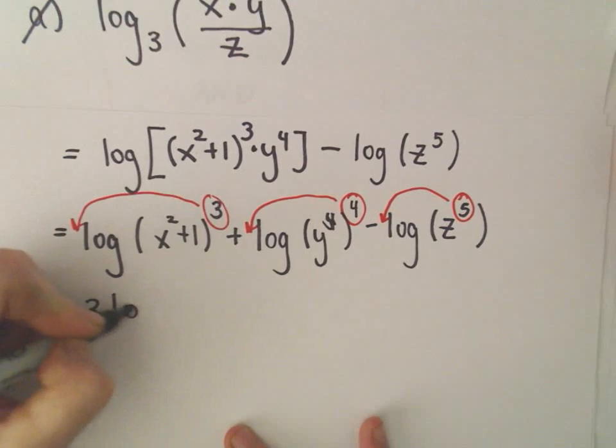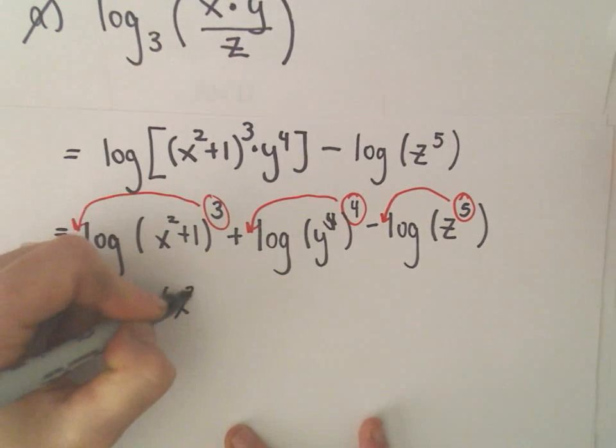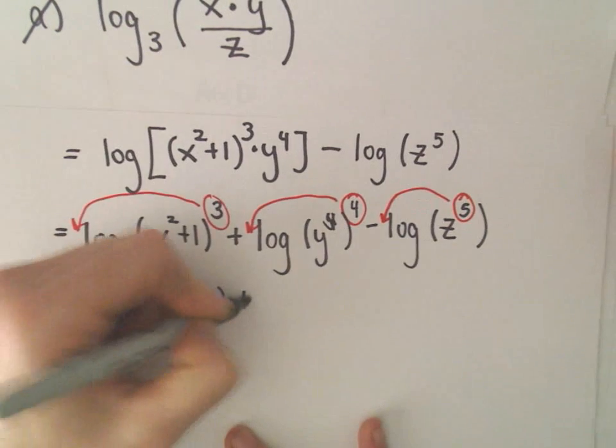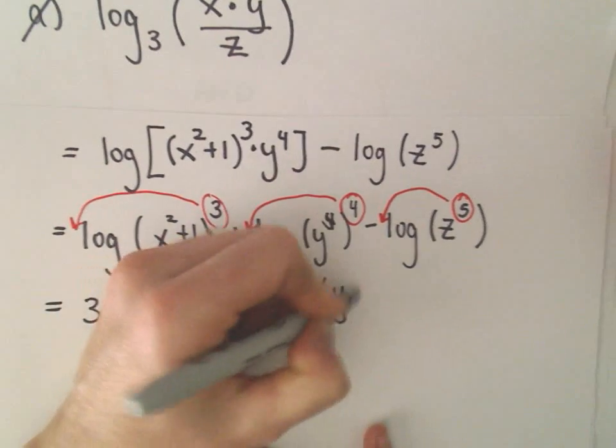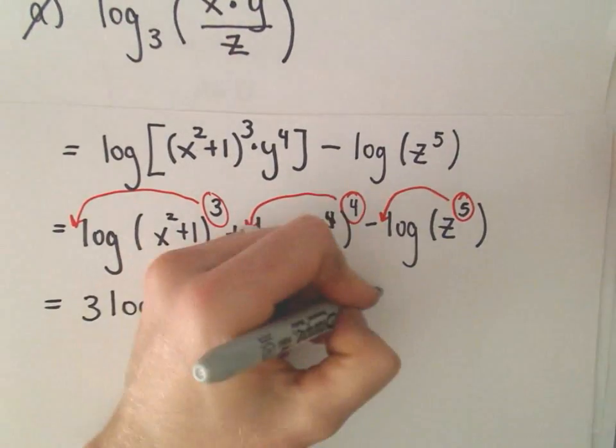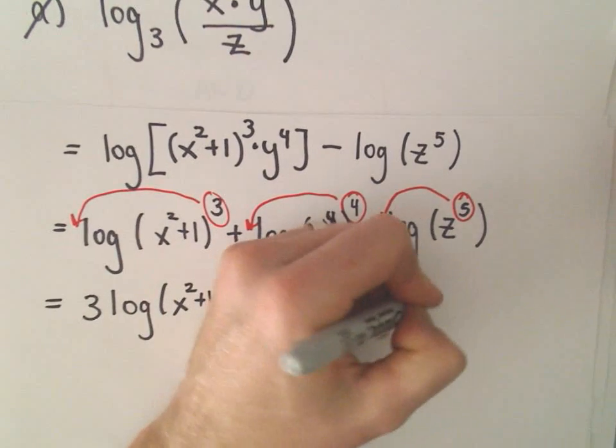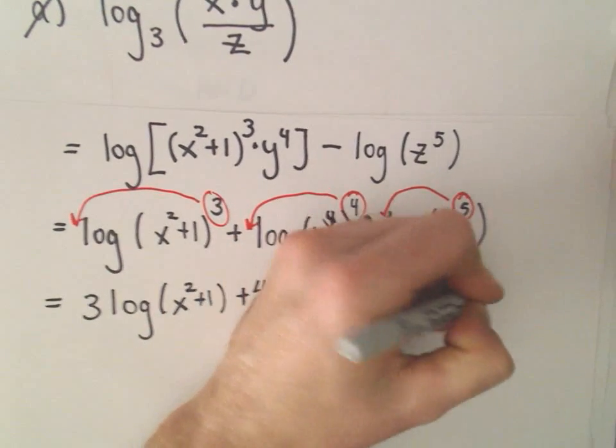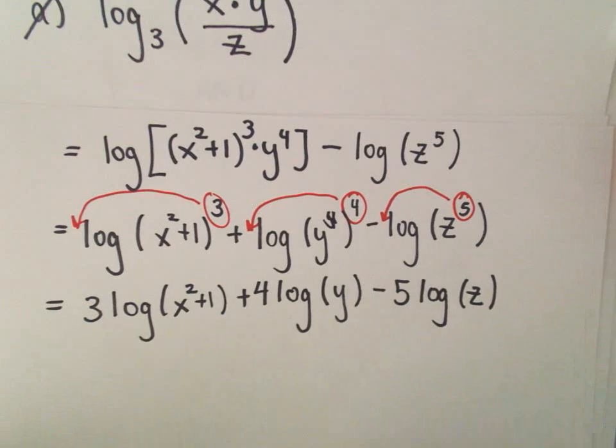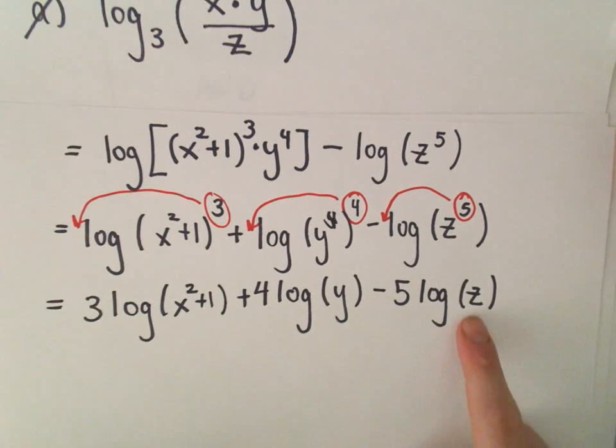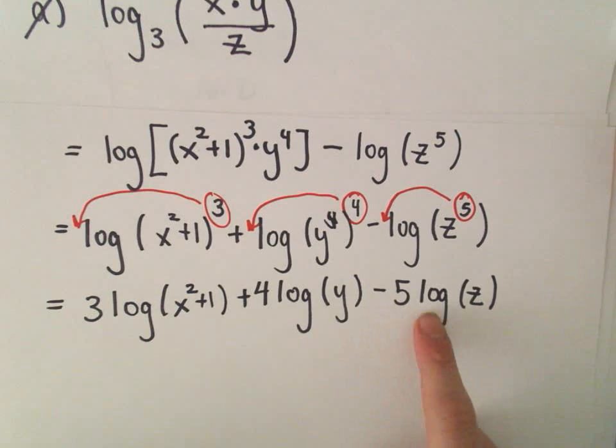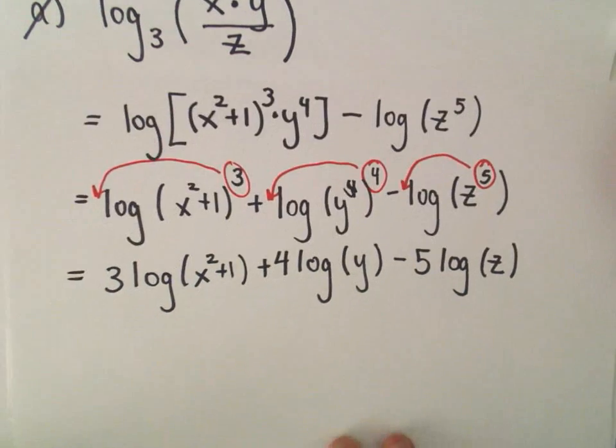So it says we have three times the logarithm of x squared plus 1 plus four times the logarithm of just y minus five times the logarithm of z. Or having just come back from London, zed. Everybody used to yell at me over there for talking about z. So minus five log z for my English friends out there.